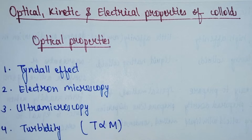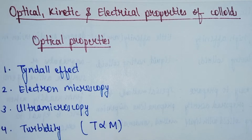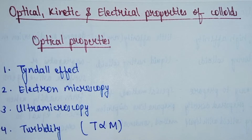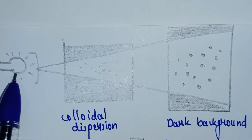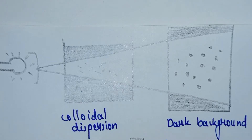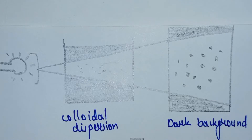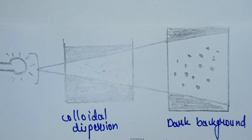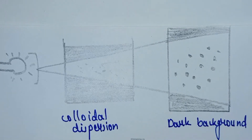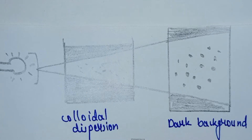First, we will see what the Tyndall effect is. The Tyndall effect is when a beam of light passes through a colloidal dispersion and is observed on a dark background — the path of light is scattered, forming a so-called Tyndall cone. We have shown a diagram here: the beam of light enters the colloidal dispersion and the path is visible because the light is scattered.